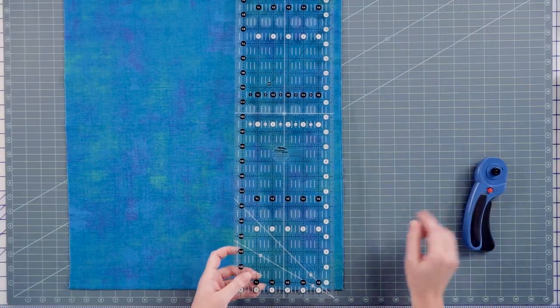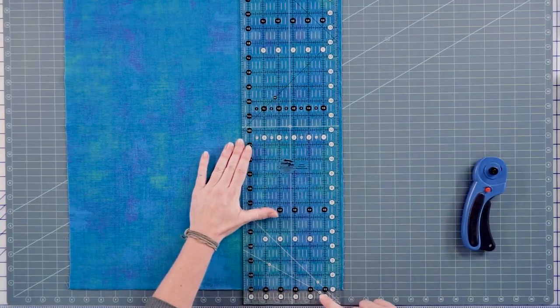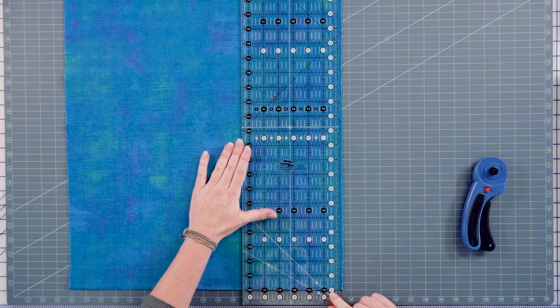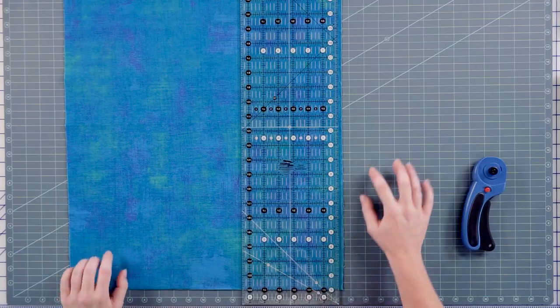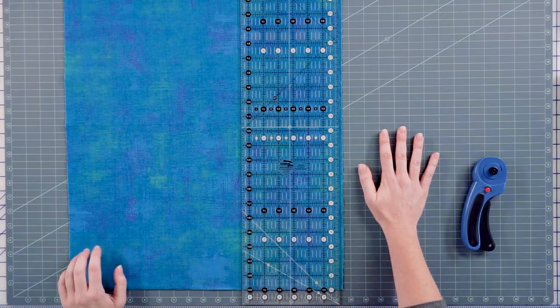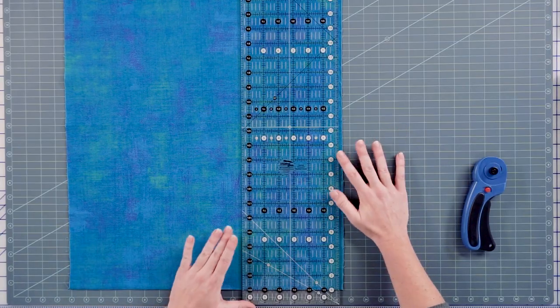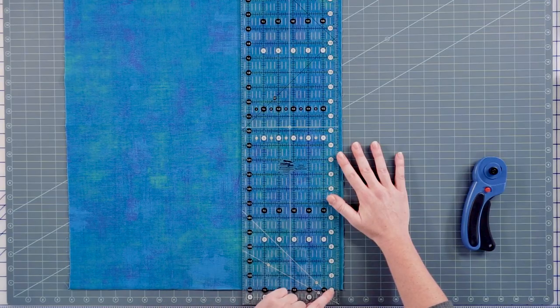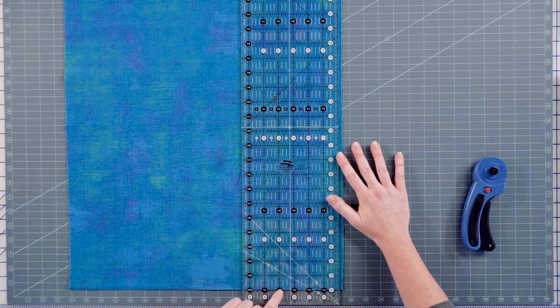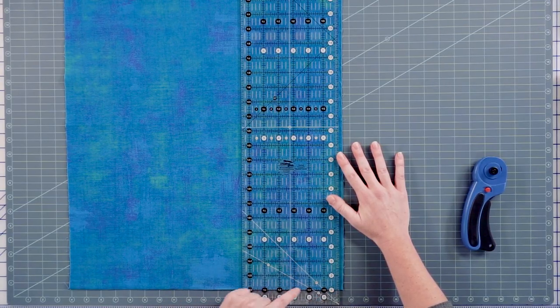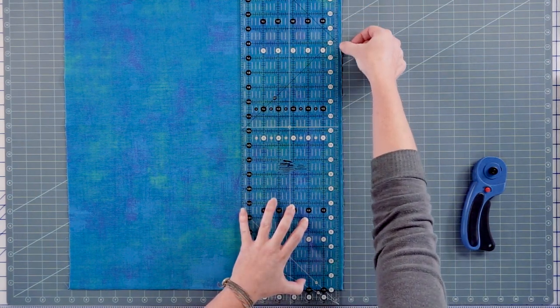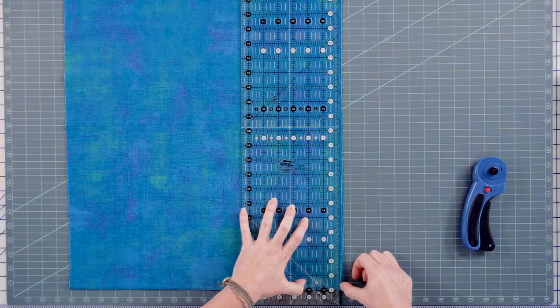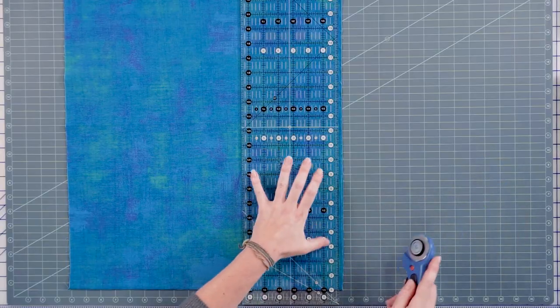We're just going to lay the ruler down here. Now I'm looking at the horizontal lines on my ruler, and I want to match those to the fold line of the fabric. I'm not so much paying attention to the lines on the mat, but I'm going to make sure my horizontal lines on the ruler match my fold line all the way across. And then I look here, did I clear both layers? Because that's going to be important. And it looks like it.